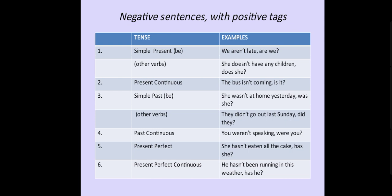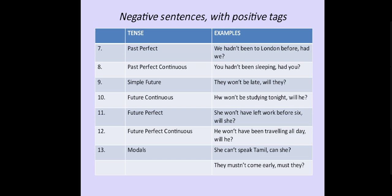Present perfect continuous — 'He has not been running in this weather, has he?' Past perfect — 'We had not been to London before, had we?' Past perfect continuous — 'You had not been sleeping, had you?' Simple future — 'They won't be late, will they?' Future continuous — 'He won't be studying tonight, will he?' Future perfect — 'She won't have left work before 6, will she?' Future perfect continuous — 'He won't have been traveling all day, will he?'